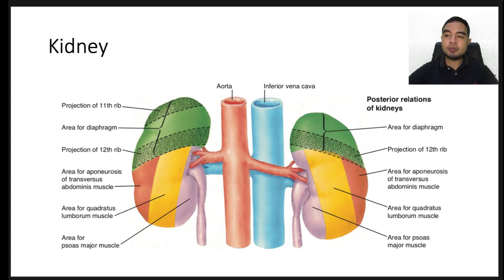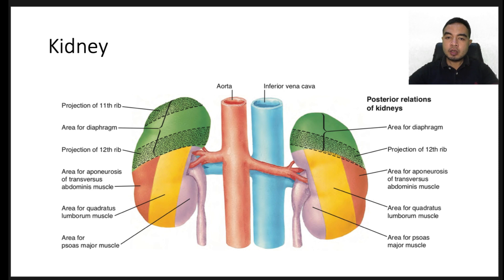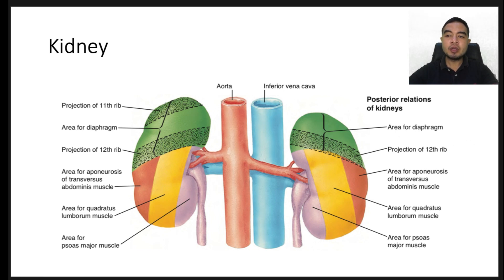The kidneys are bordered posterolaterally by the quadratus lumborum muscle and posteromedially by the psoas muscle. Additionally, the diaphragm drapes across the posterior aspect of the superior pole of each kidney. The exact position of the kidney within the retroperitoneum varies during the different phases of respiration, body position, and presence of anatomic anomalies.